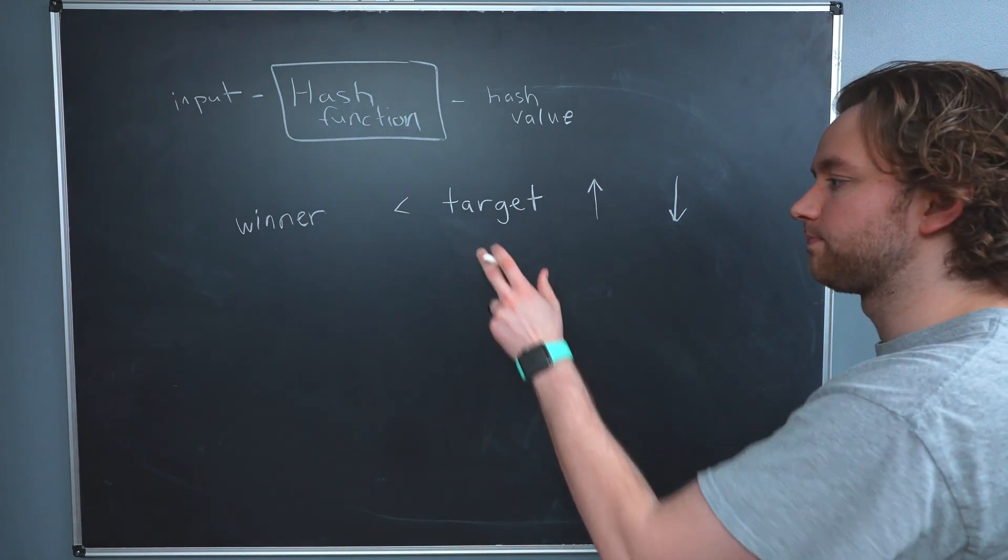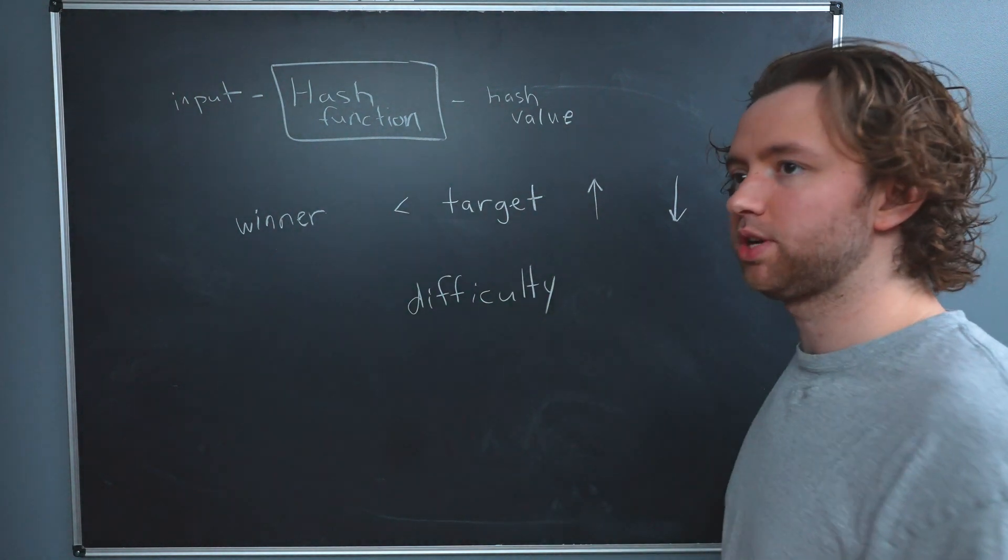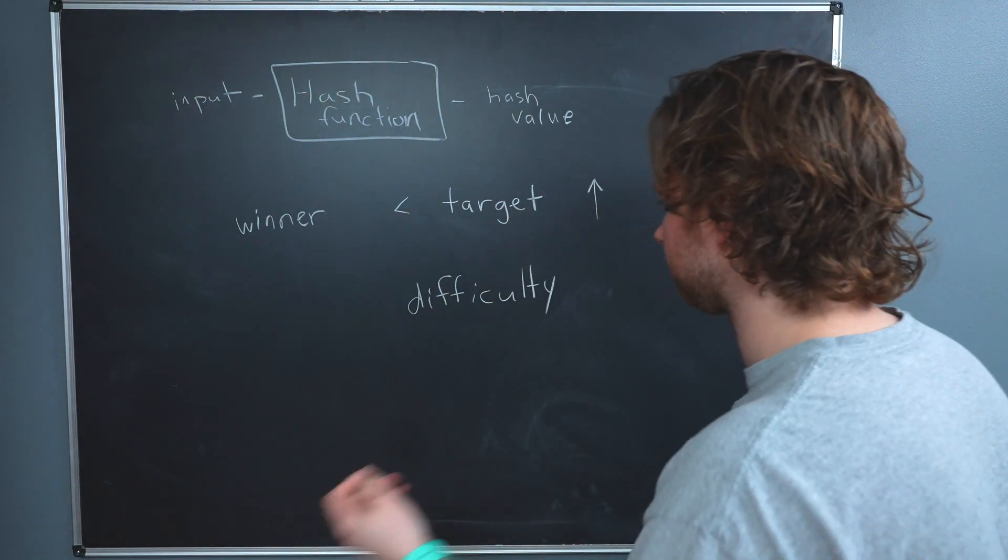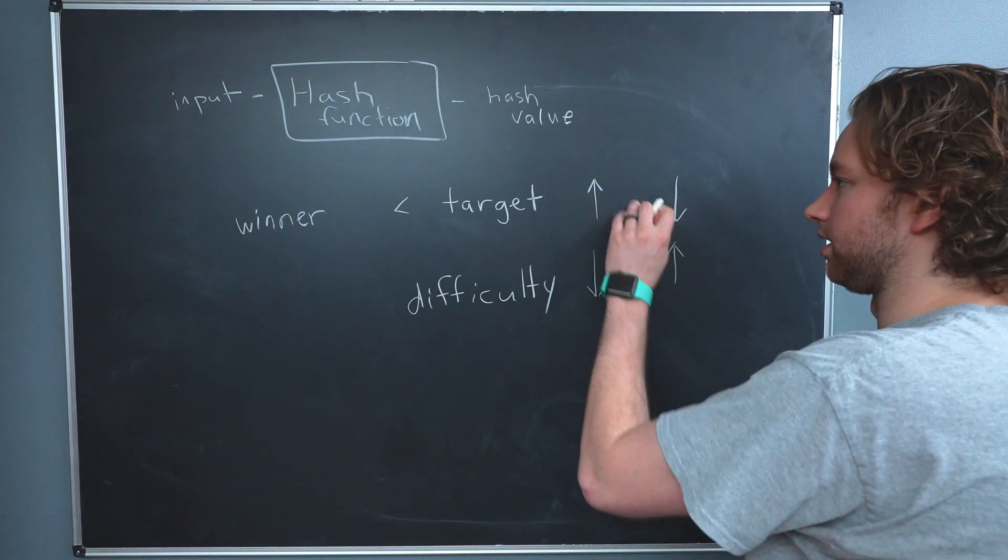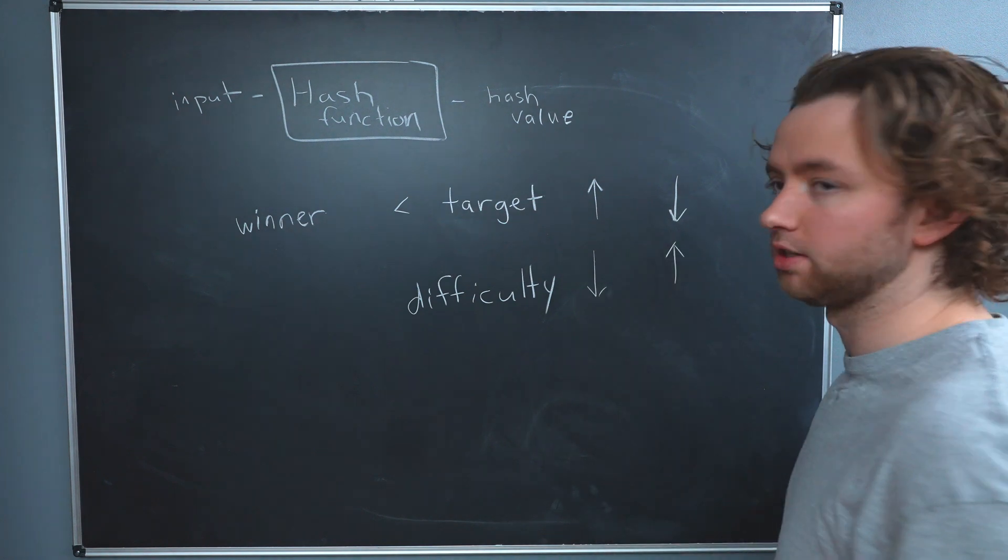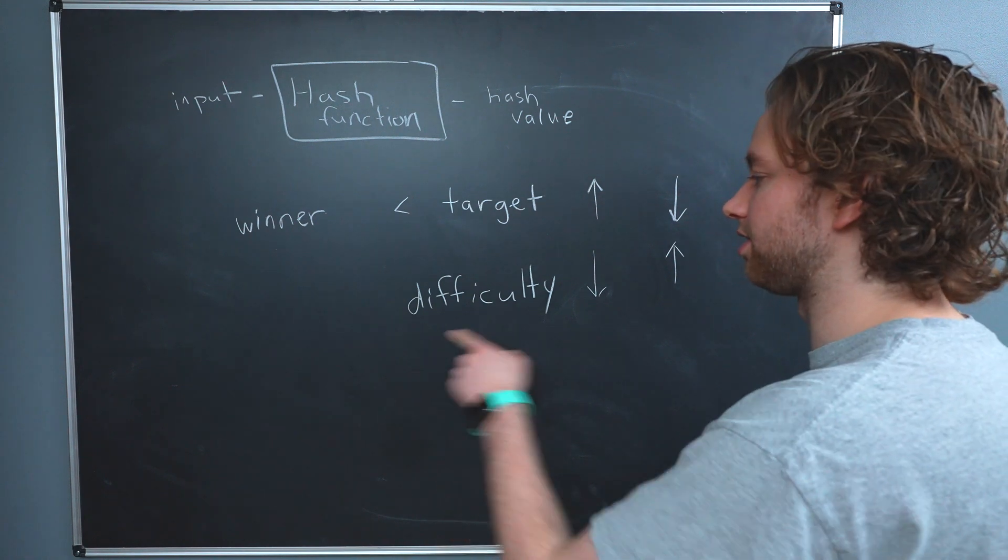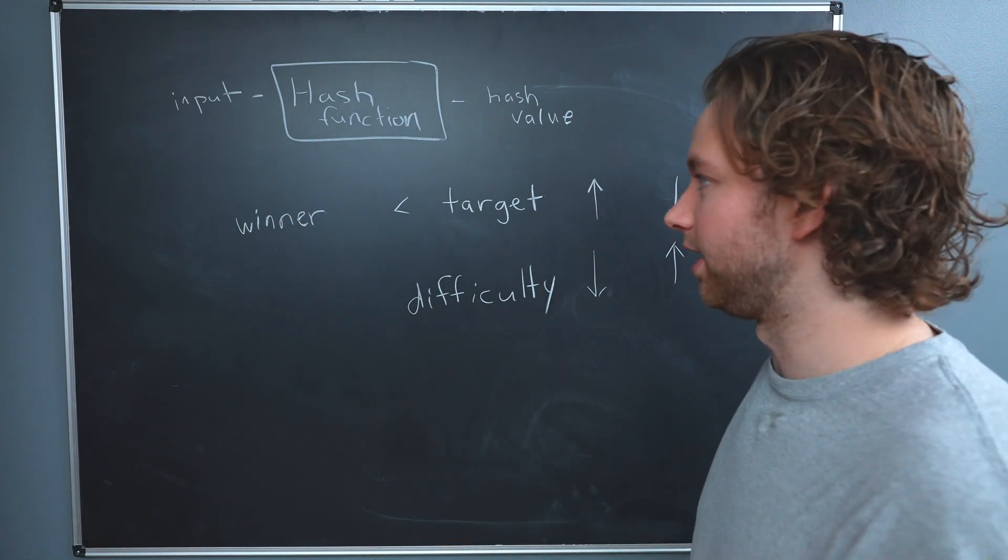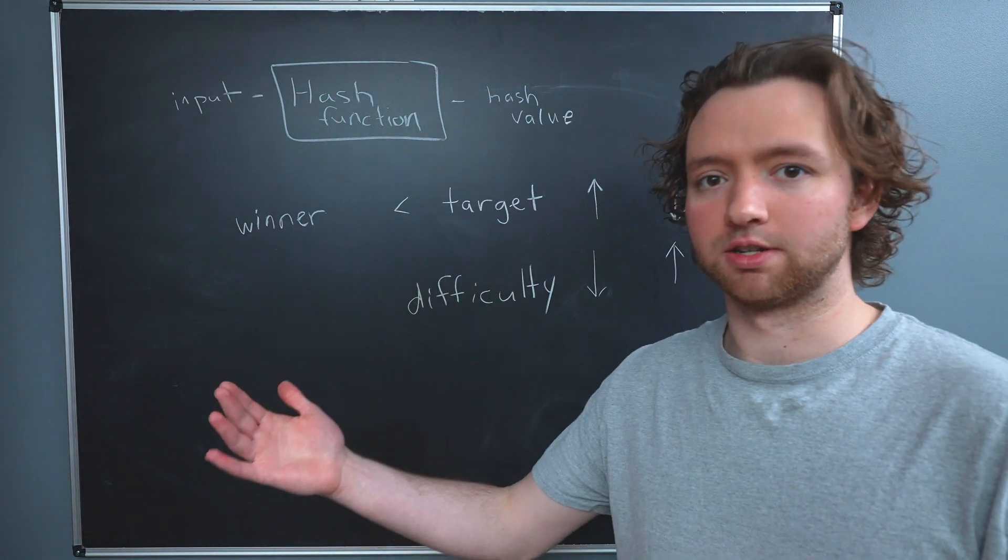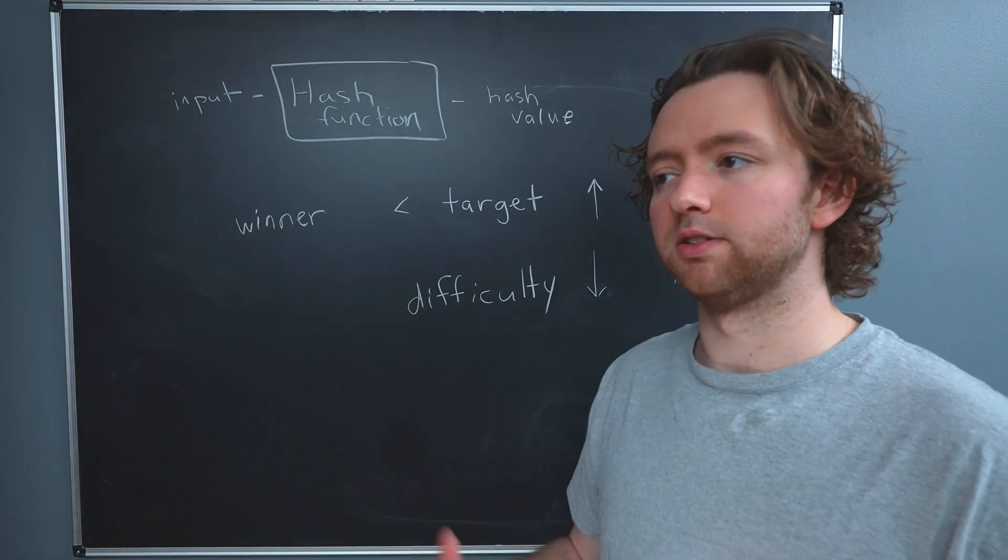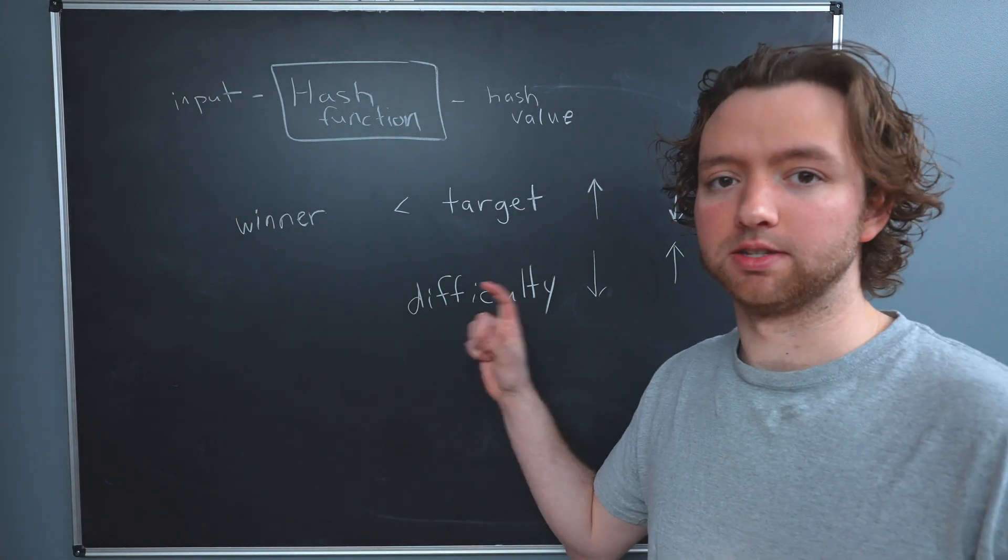So this is directly related to difficulty, which is pretty much a more human readable inverse of this. As the target goes up, the difficulty goes down. And as the target goes down, the difficulty goes up. So you'll hear both, but they're not interchangeable. They're like the opposite. This is just a more friendly variation because it's a little confusing to think of the target and increasing that target makes it easier. So difficulty is just a little more user friendly, but they're basically describing the same thing.